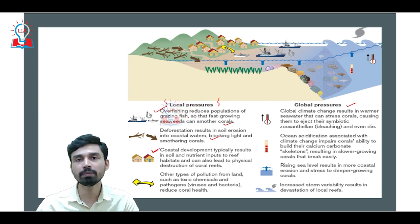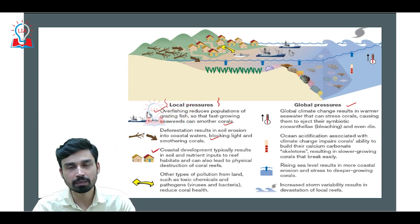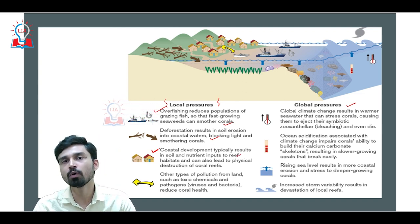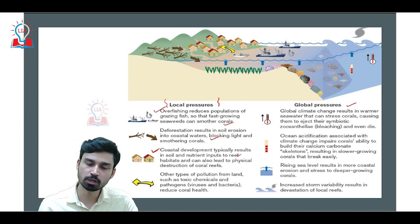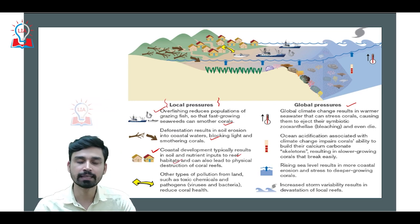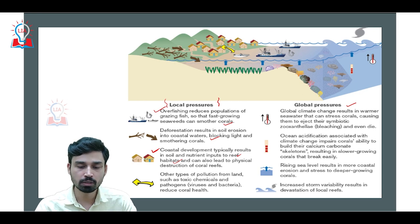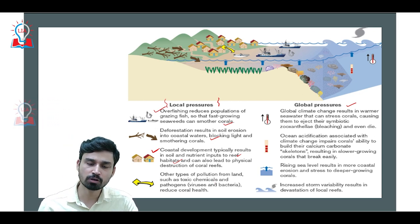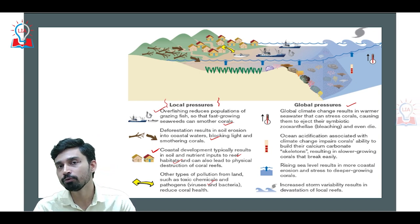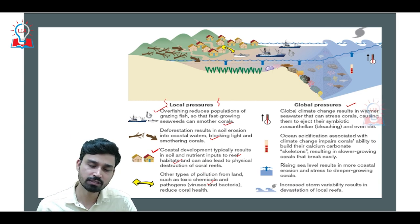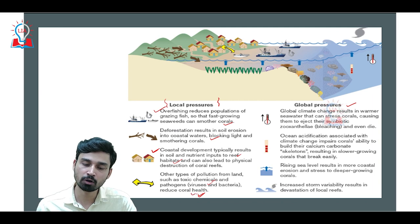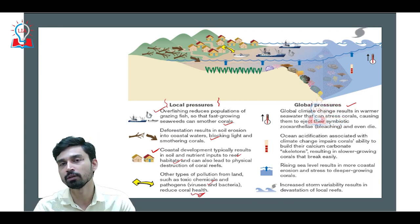Rapid coastal development also typically results in large amounts of soil and nutrients washing into reef habitats, causing physical destruction of corals. Any kind of pollution emanating from land — such as toxic chemicals, pathogens, or untreated industrial effluent discharge — can also cause pathogens to infest the corals, leading to reduction or destruction of the coral habitat.